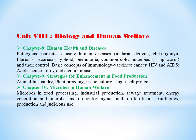Chapter 9, strategies for enhancement in food production. Here we're learning about animal husbandry, what is plant breeding, tissue culture and single cell protein. Chapter 10, we're learning about microbes in food processing — especially this part is microbiology — industrial production, sewage treatment, energy generation and microbes, biocontrol agents and biofertilizers. We're also learning about antibiotics, their production and judicious use.